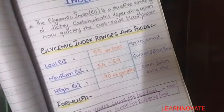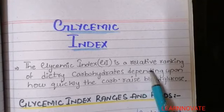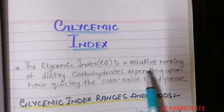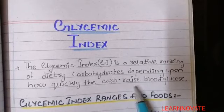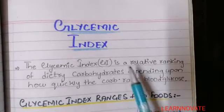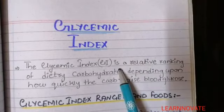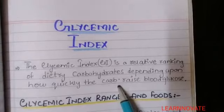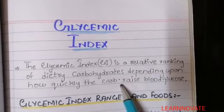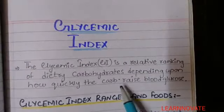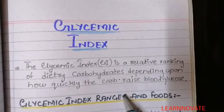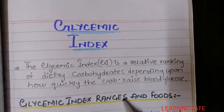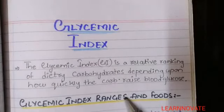Starting from the definition of glycemic index. The glycemic index is a relative ranking of a dietary carbohydrate depending upon how quickly the carbohydrate raises your blood glucose level. It is a rank given to each food or carbohydrate indicating how quickly it will increase your blood glucose level. Carbohydrates that increase blood glucose level suddenly are considered high glycemic index foods, while carbohydrates that cause a normal or slow increase are considered low glycemic index foods, like dietary fibers.